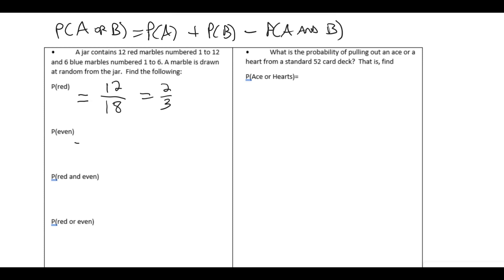The probability of getting an even number. There are six even reds. Half of them will be even. The other half are odd. And there are three even blues. So that's a total of nine evens out of the 18 in the jar. So that's one-half.